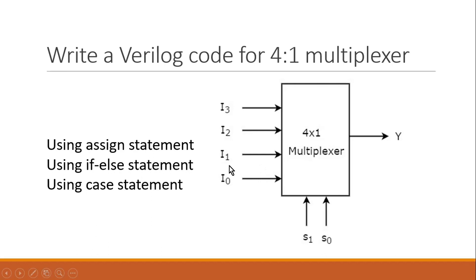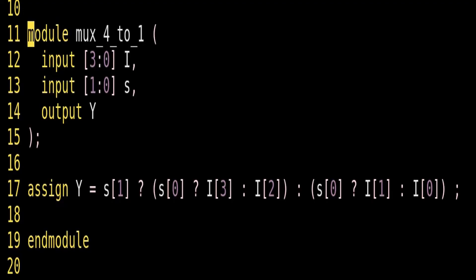Select line s1 decides whether the group i0, i1 or the group i2, i3 will be passed to y. Select line s0 decides within the first group whether i0 or i1 will be passed to y, and within the second group whether i2 or i3 will be passed to y. Now let me show you the code. The module for multiplexer 4-to-1 has a 4-bit input i, a 2-bit select line s, and a single-bit output y, using an assign statement.